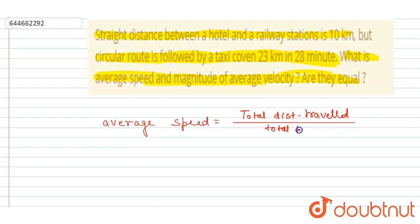Total time to travel this distance is 28 minutes and distance traveled is 23, so I will write 23 by 28. This is in minutes, we can convert it into hours by dividing it with 60, so it will be 49.3 kilometer per hour. So this is the average speed.